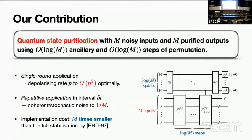Our contribution is that we design a quantum state purification scheme: taking m noisy inputs and outputting m purified outputs using order log m ancillary qubits and order log m steps of permutation operations controlled by each ancillary. This quadratically suppresses error probability p to p squared. Applying this gadget repetitively, you can suppress either coherent or stochastic errors linearly with the number of copies. The circuit implementation cost is drastically reduced from previous work with the same state purification idea.